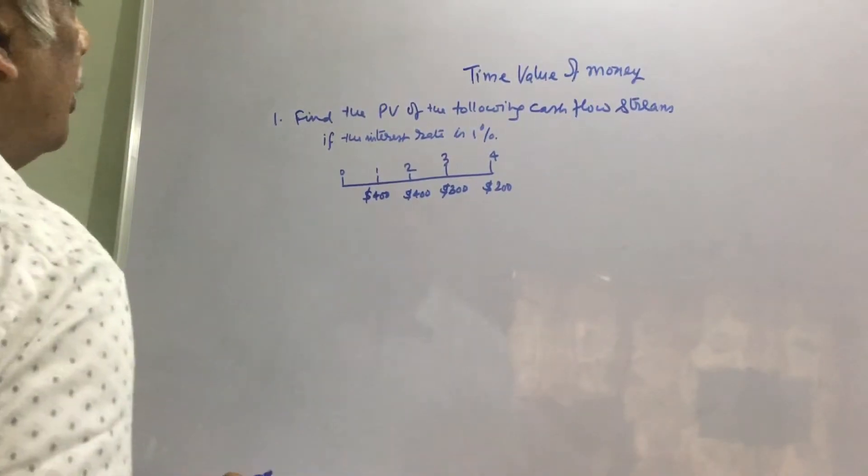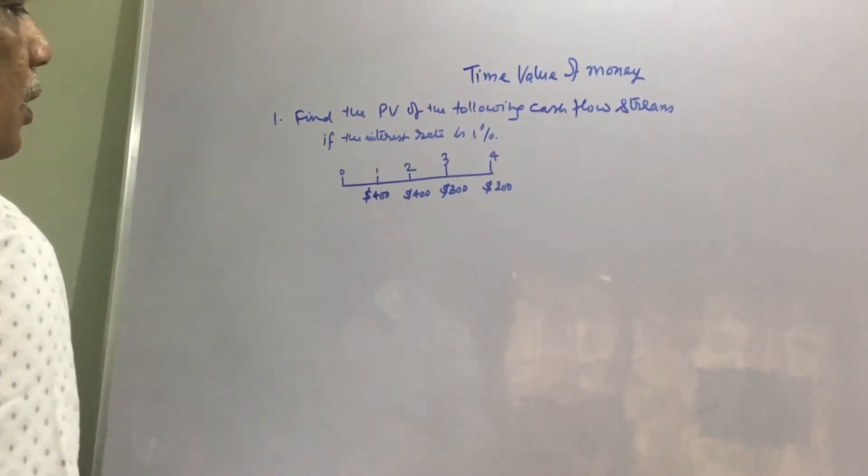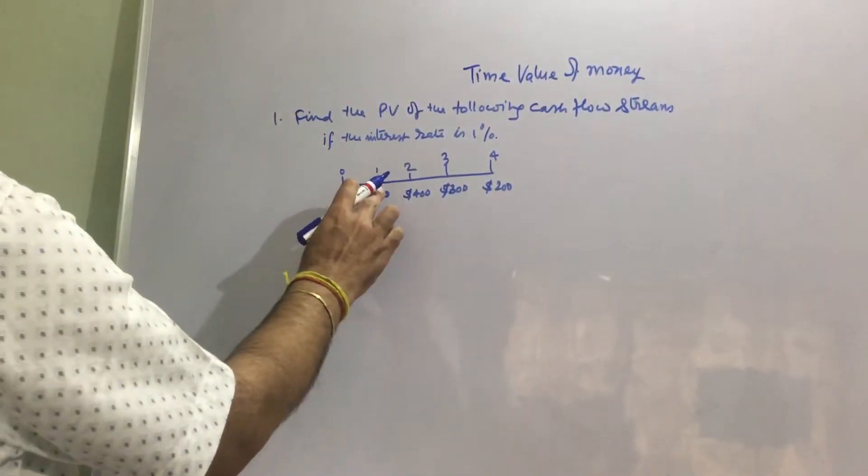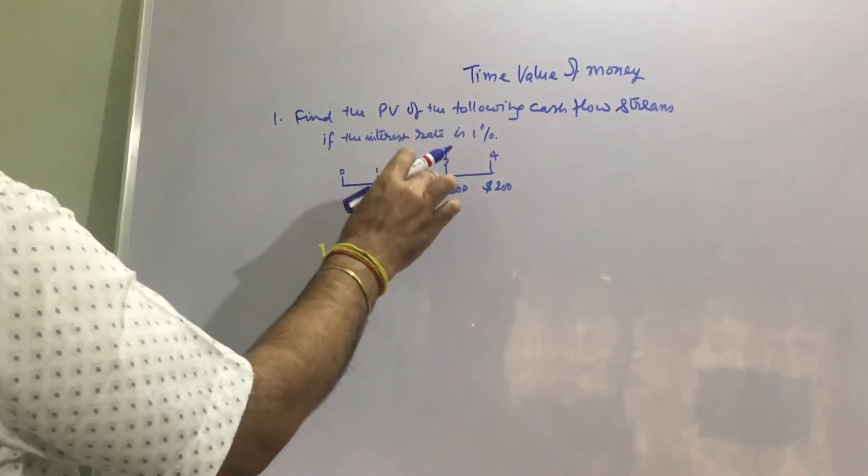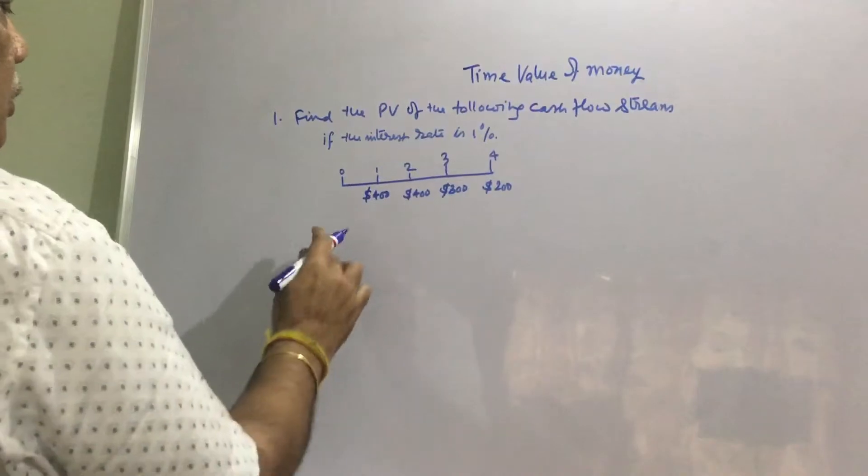So overall present value will be the present value of the future money which we are getting. See, we get money after 1 year $400, after 2 years $400, after 3 years $300, after 4 years $200.